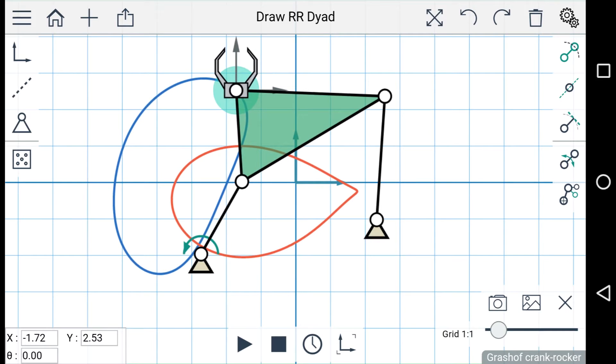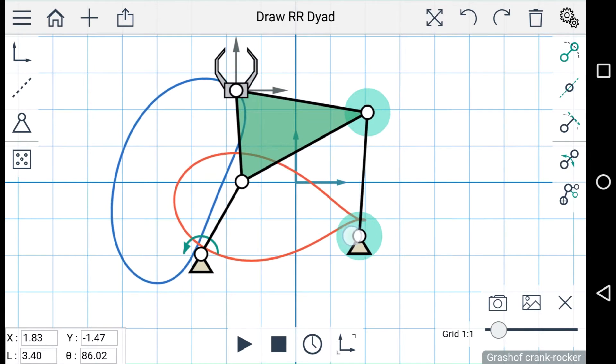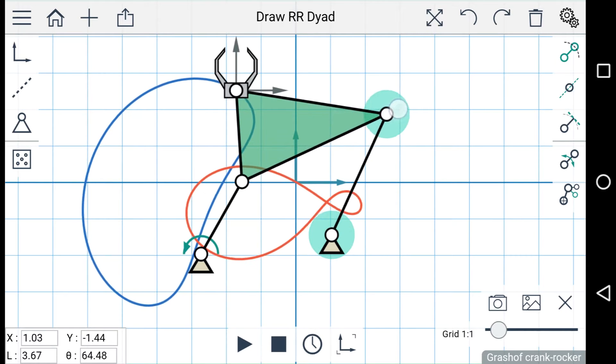If you don't like the way your linkage came out, you can tap one of the dyads and move the ground link, or change the length and angle of the dyad.